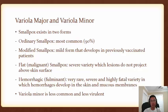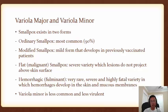The next type is flat or malignant smallpox, a severe variety in which the lesions that smallpox is famous for do not project above the skin surface. The last is hemorrhagic or fulminant smallpox, a very rare, highly fatal, severe variety in which hemorrhages develop in the skin or mucous membranes, inducing spontaneous bleeding. The second form is variola minor, which is a less common, less lethal, and less virulent form of smallpox.